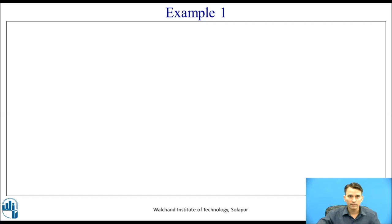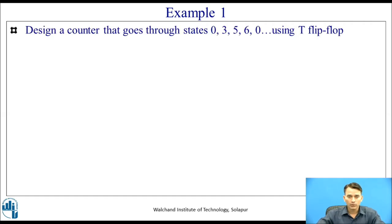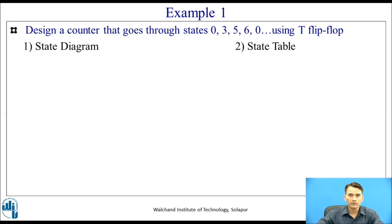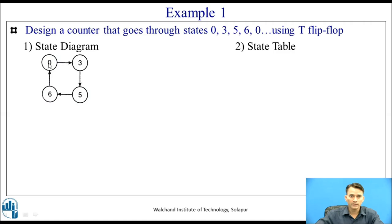Example 1: Design a counter that goes through states 0, 3, 5, 6, 0 using T flip-flops. Here, the counter is up-counting but through specific states. We draw the state diagram first, which should have only these states: from state 0, the next state is 3, then 5, then 6, and after state 6 it repeats back to the initial state 0.